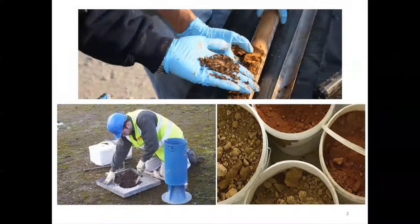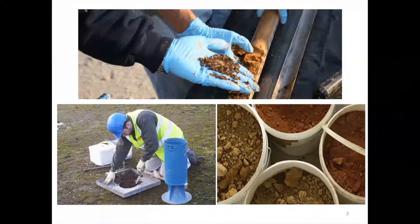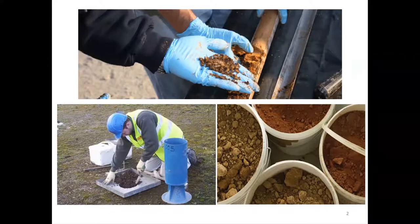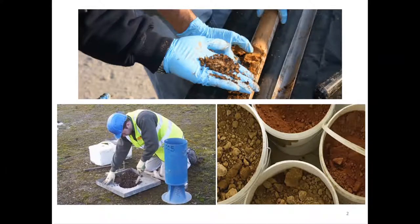There are different methods for soil exploration to understand what type of soil lies under the ground. Once you go to a site, you need to understand what type of soil is there at the surface, at one meter from the ground, at two meters, at three meters, and up to maybe 100 meters, depending upon your superstructure.